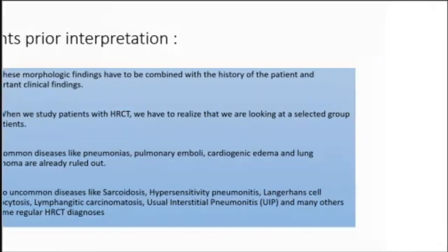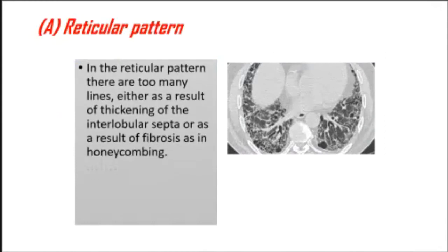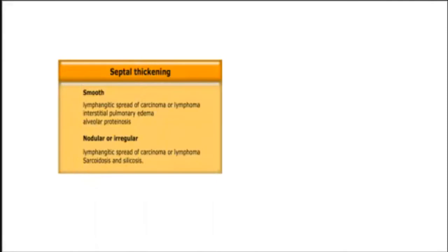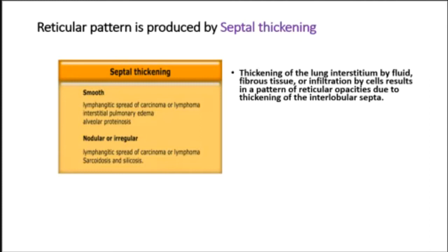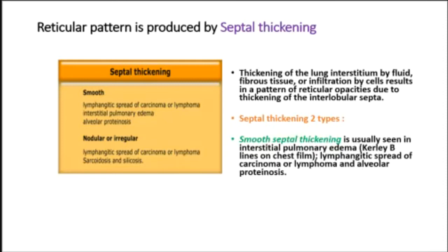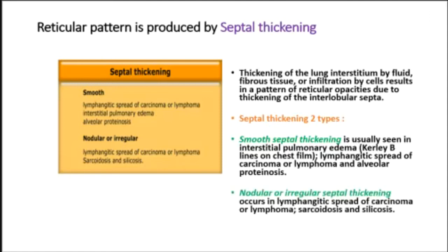In a reticular pattern, there are too many lines, either as a result of thickening of the interlobular septa or as a result of fibrosis, as in honeycombing. Thickening of the lung interstitium by fluid, fibrous tissue, or cellular infiltration results in reticular opacities. Septal thickening has two types: smooth septal thickening, usually seen in interstitial pulmonary edema (Kerley B lines on chest film), lymphangitic spread of carcinoma or lymphoma, and alveolar proteinosis.